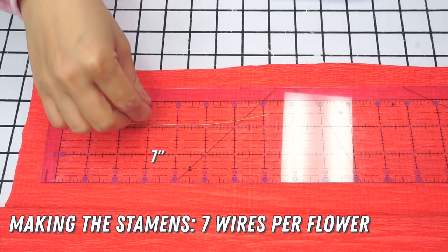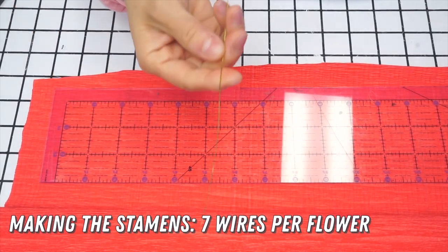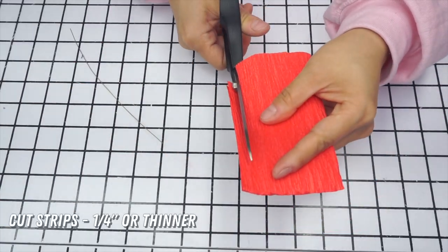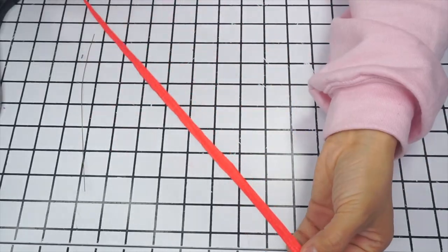With that, it's time to make the stamens. Cut seven pieces of wire per flower, each around seven inches long. Then cut a bunch of super thin strips of crepe paper.